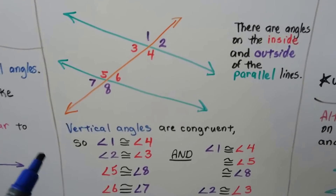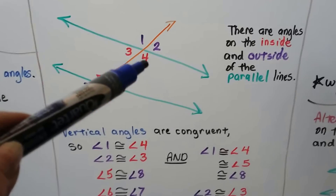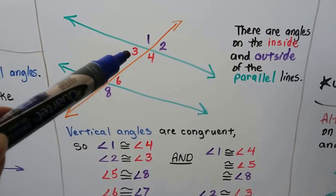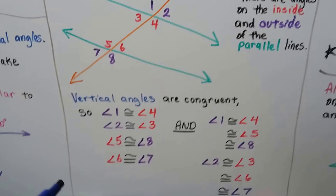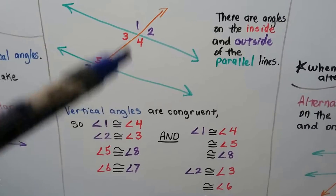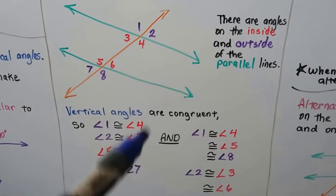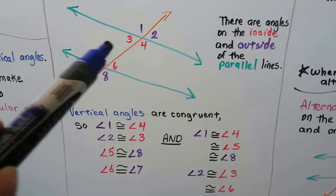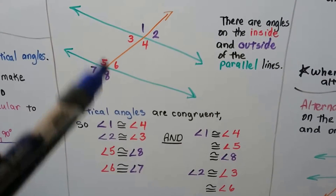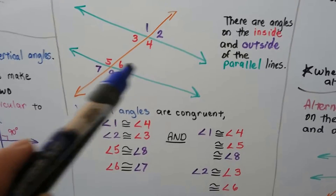Vertical angles are congruent. So we know if this is angle one, it must be congruent to angle four because they're vertical angles. And two would be congruent to three. So angle one is congruent to angle four — they're vertical angles. Angle two is congruent to angle three — vertical angles. Angle five is congruent to angle eight — vertical angles. And six and seven are vertical angles, they're congruent.